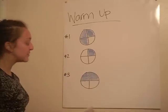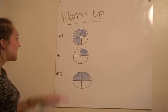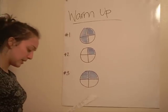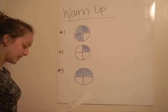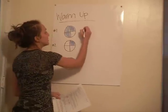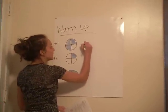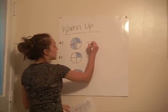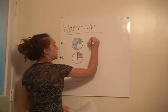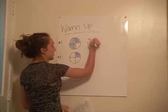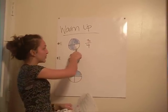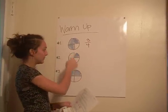Who can tell me what fraction of the circle is shaded in figure one? If we look at this, out of four sections, three of them are shaded blue. Therefore, three-fourths of the circle is shaded.